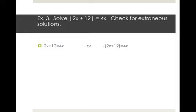For the first equation, subtract 2x from both sides to get 12 equals 2x, then divide by 2 to get 6 equals x. For the second equation, distribute the negative to get negative 2x minus 12 equals 4x, then add 2x to both sides to get negative 12 equals 6x, then divide by 6 to get negative 2 equals x.